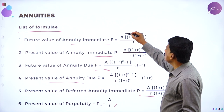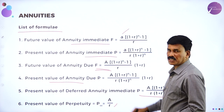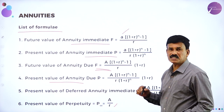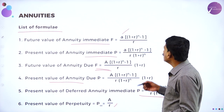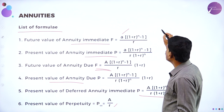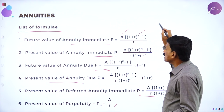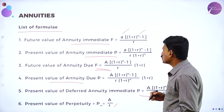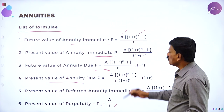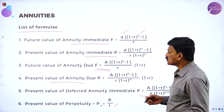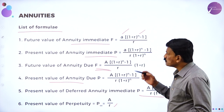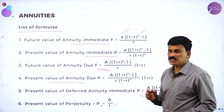Here, A is the annuity amount, R is the rate of interest in decimal, and N is the time period. These are the formulas used to find answers based on the given conditions.